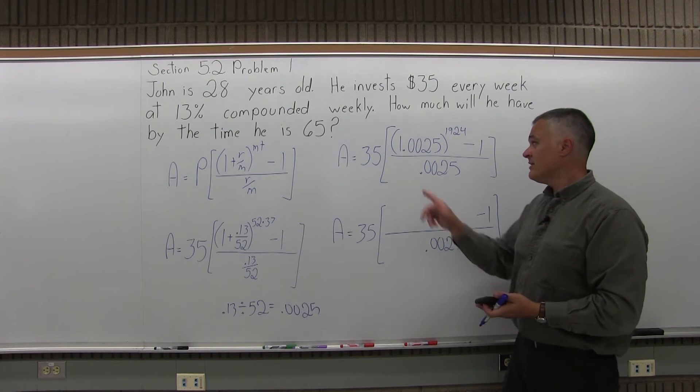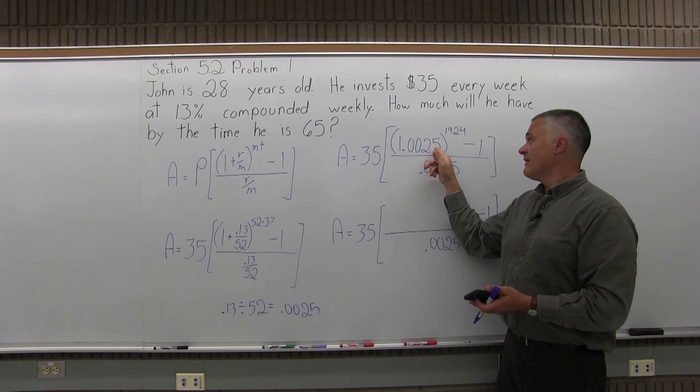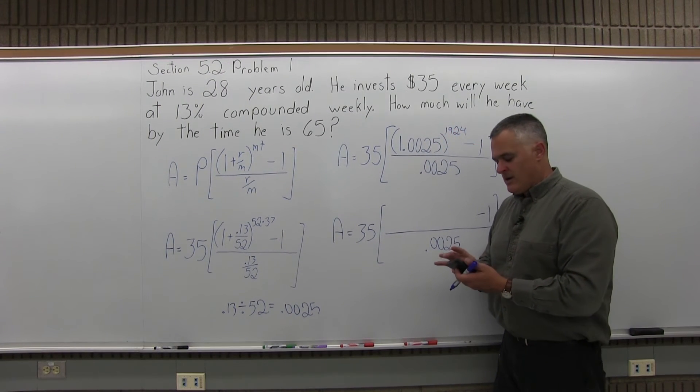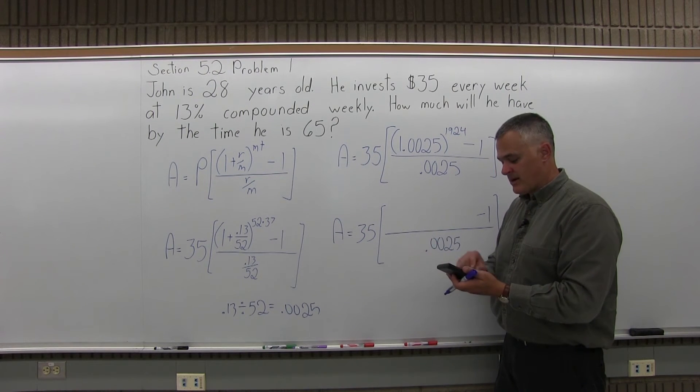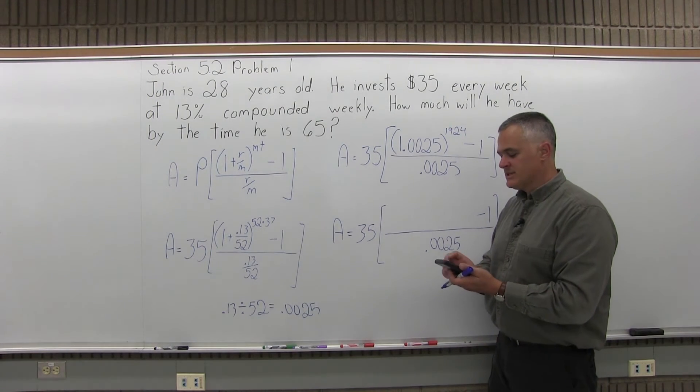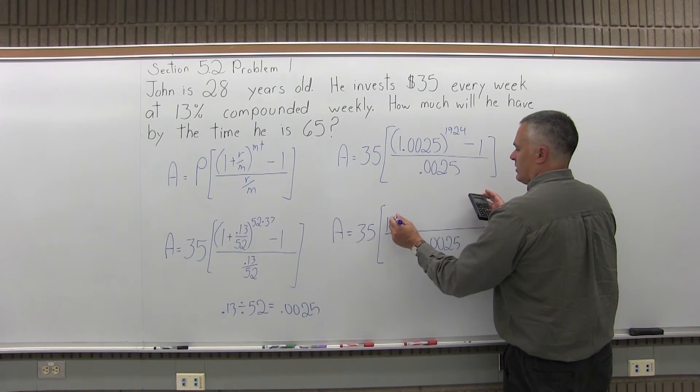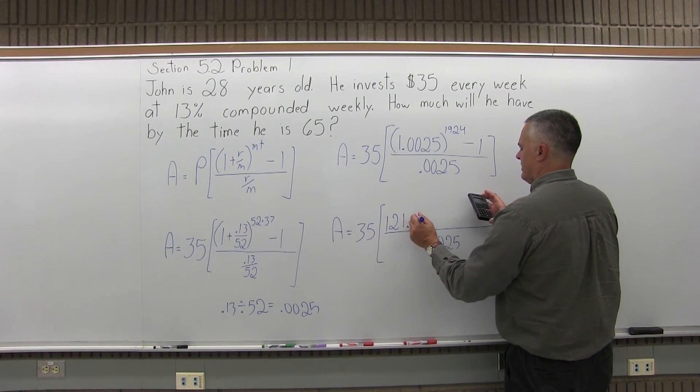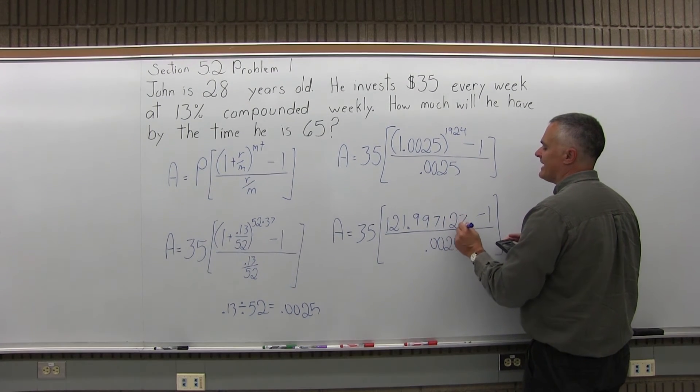So now, to calculate this 1.0025 to the 1,924th power, I'll use my calculator and I'll do 1.0025, press the exponent button on my calculator, and to the 1924 equals, and the result of that enormous exponent is 121.9971278.